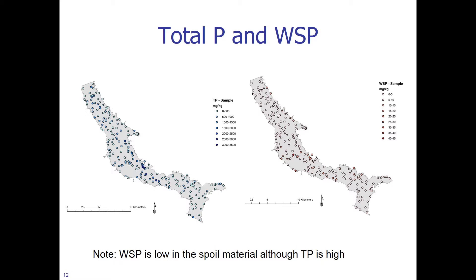Now let us look at total P and water soluble P values of the Kissimmee River basin. What we notice is that water soluble P is low in the spoil material, although the TP is high. Recalling that the red spoil area runs from north through Phase 1 and Phase 2, we find that the water soluble P is not very high, while at the same time you have high total P values.